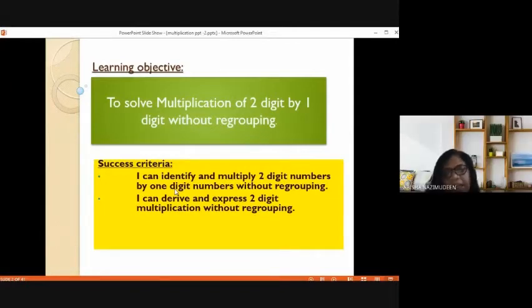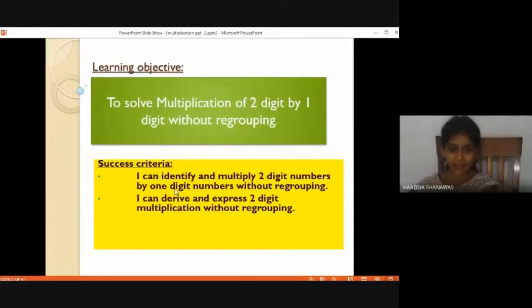Then what is your success criteria? I can identify and multiply two digit numbers by one digit number without regrouping. I can derive and express two digit multiplication without regrouping. Okay. Good.